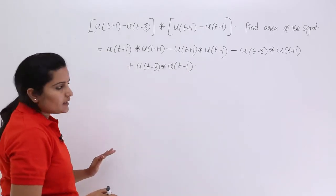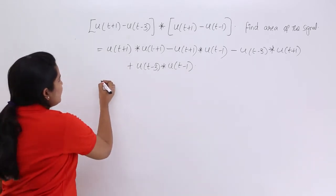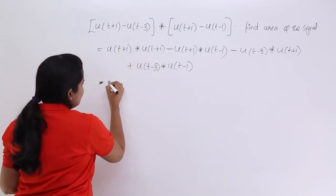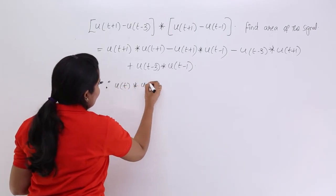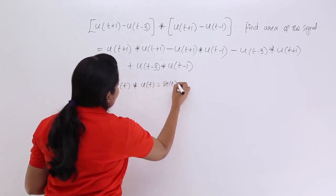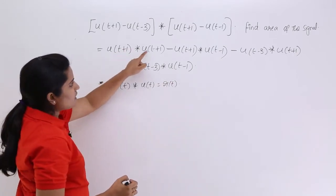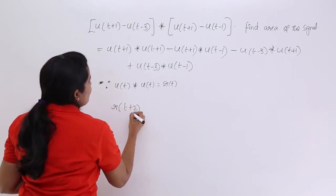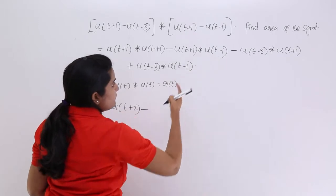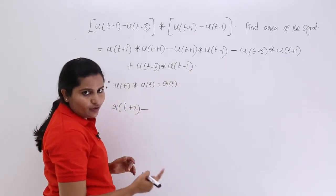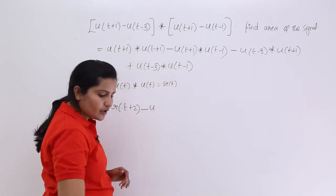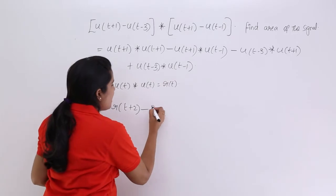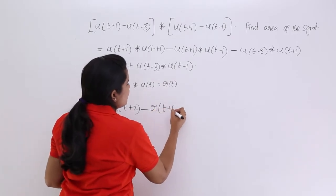For this we need to calculate the resultant signal and its area. We know that u(t) convolution with u(t) is equal to r(t). So I am going to write u(t+1) convolution with u(t+1) as r(t+2). For shifted unit steps you get a shifted ramp function, so u(t+1) convolution with u(t-1) gives r(t+1-1), which is r(t).